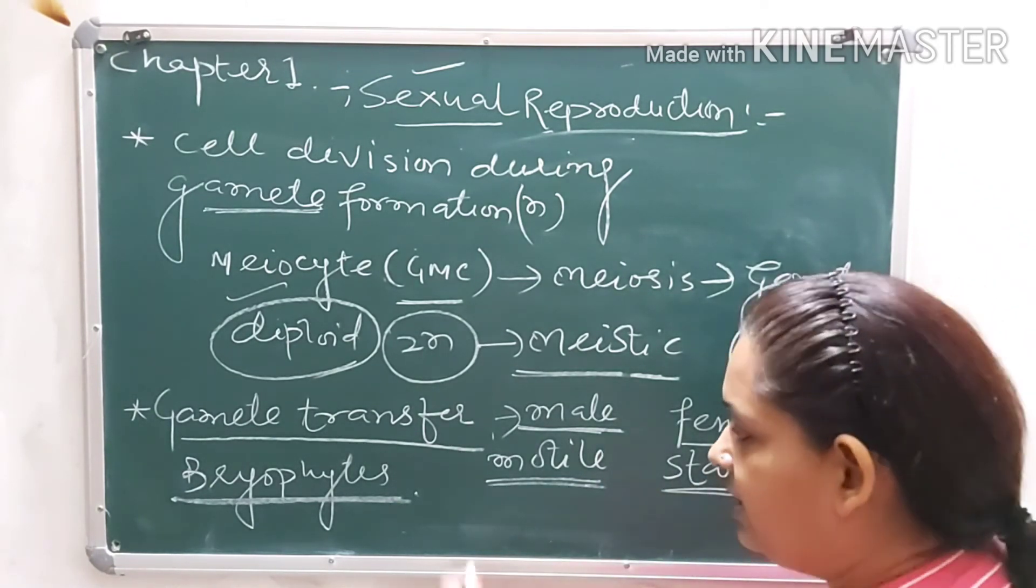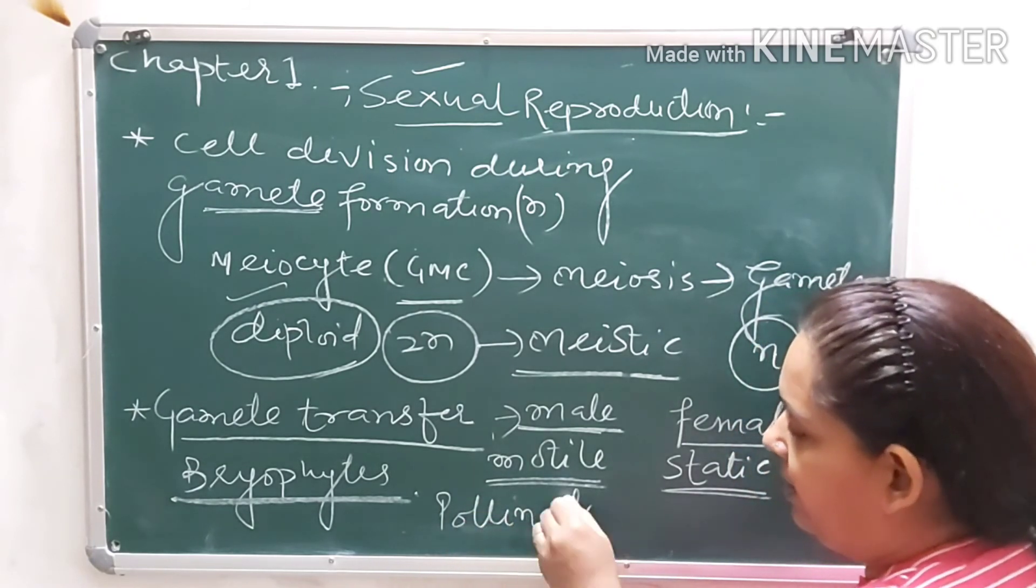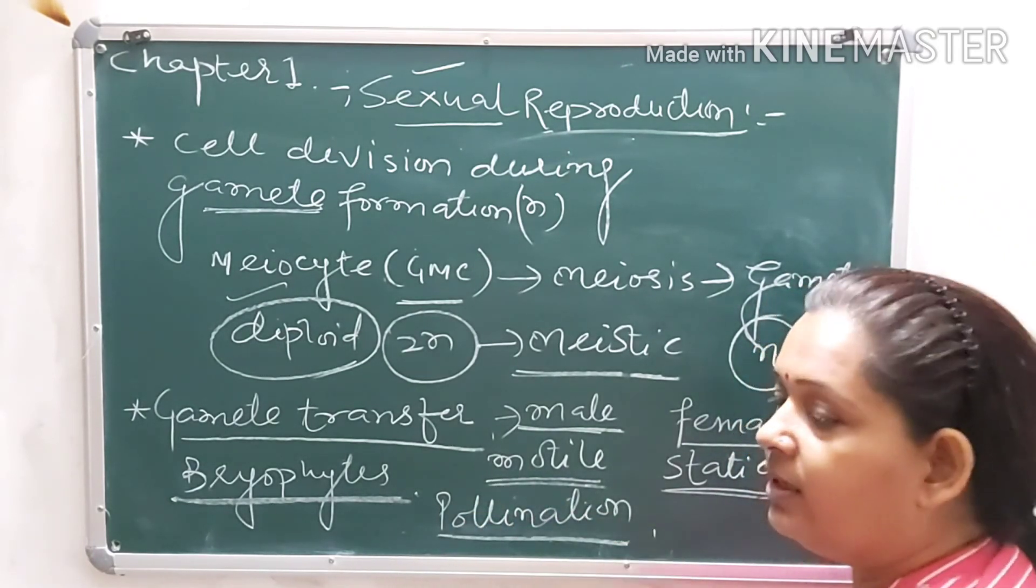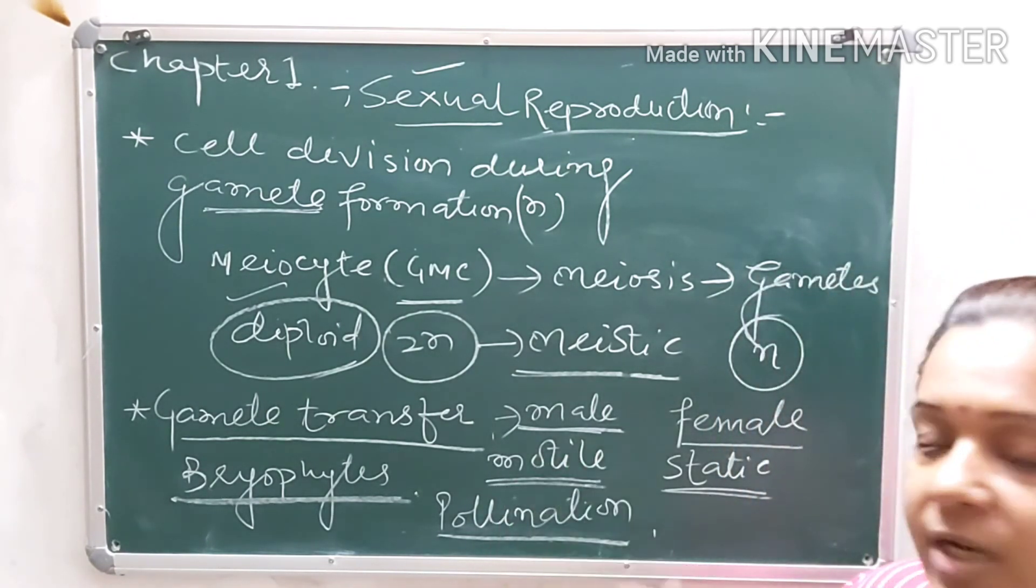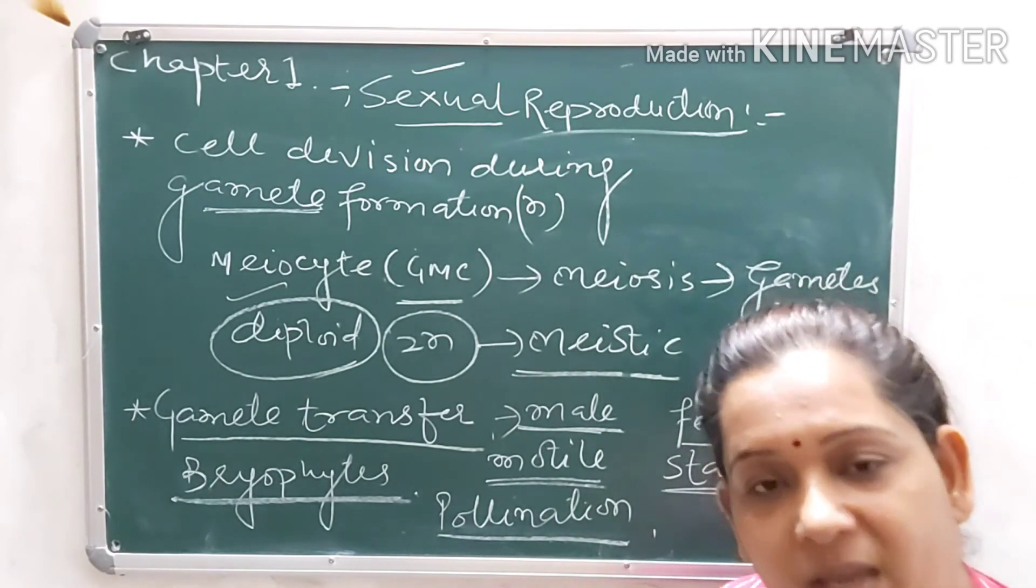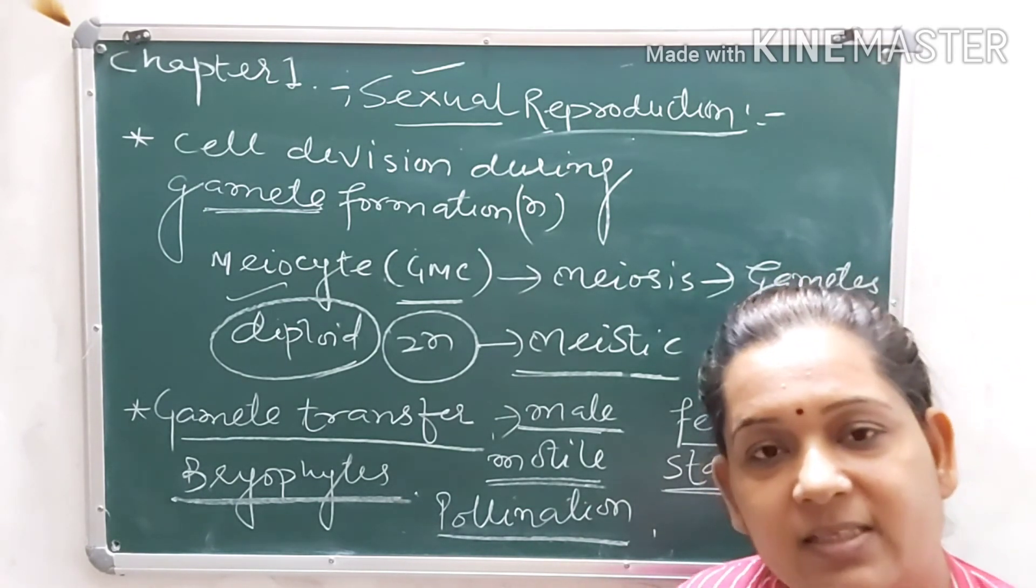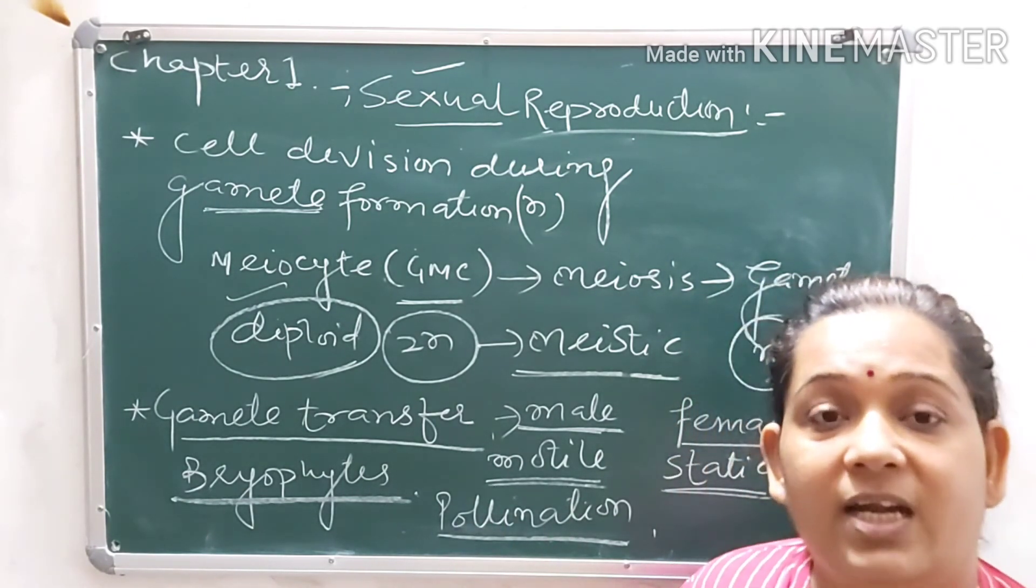Now if we talk about flowers, we have the term pollination. In flowers, both are non-motile. Pollen grain transfers to stigma, that is pollination. How does pollination occur? Transfer of pollen grain from anther to stigma. What is the medium requirement? Pollinating agents are required.